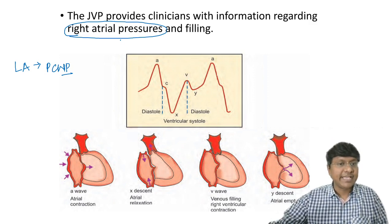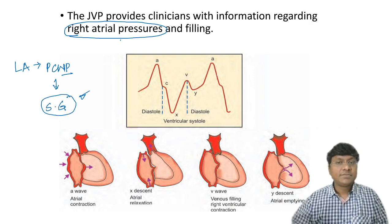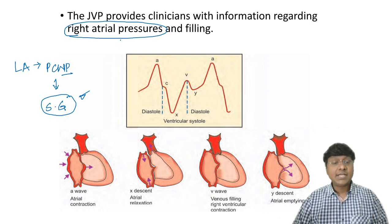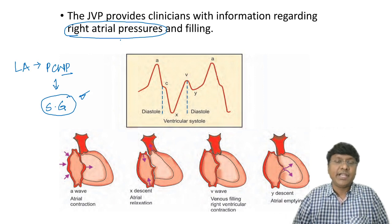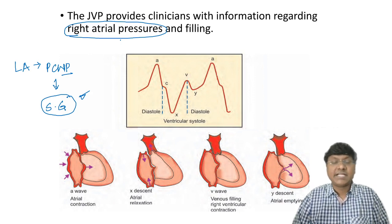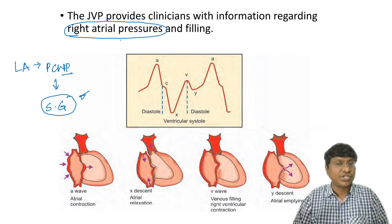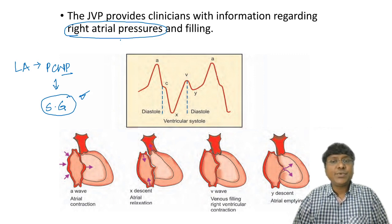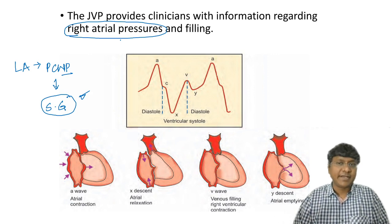Pulmonary capillary wedge pressure is measured with the help of a Swan-Ganz catheter. This value is very important in differentiating cardiogenic from non-cardiogenic pulmonary edema. In ARDS (acute respiratory distress syndrome), the pulmonary capillary wedge pressure is normal — that's non-cardiogenic pulmonary edema. Whereas in cardiogenic pulmonary edema, such as due to left ventricular failure, the pulmonary capillary wedge pressure is increased.